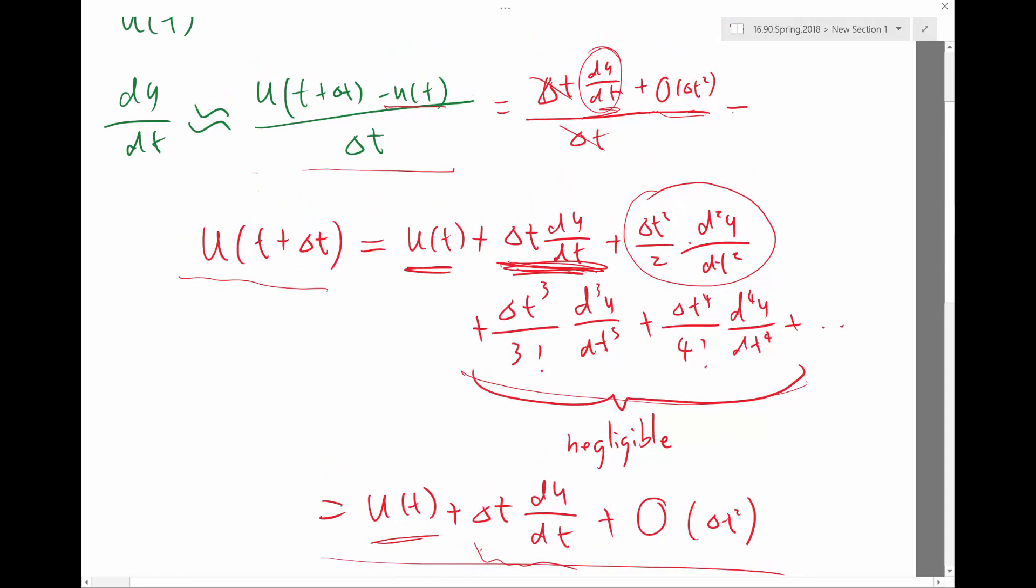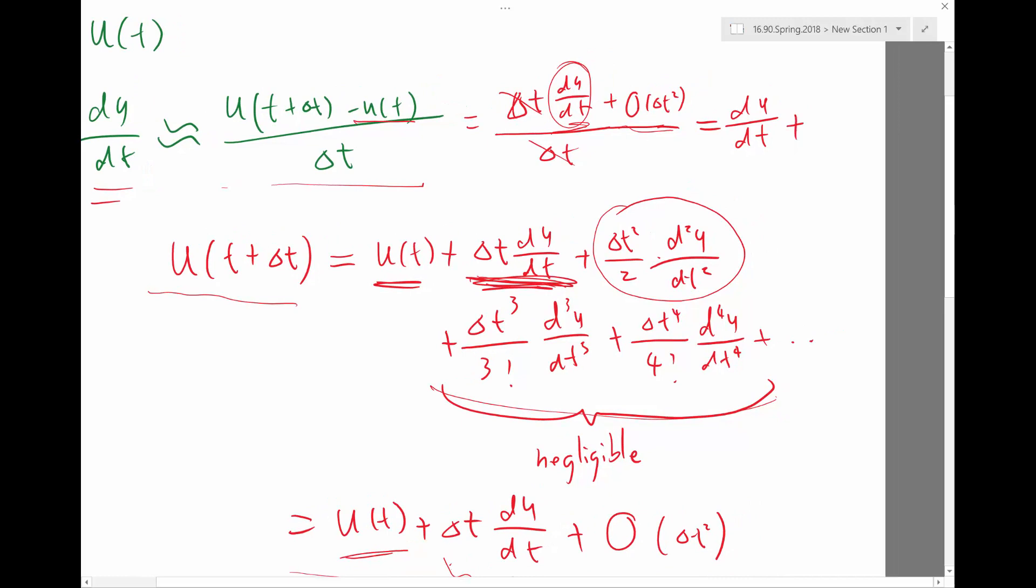So, what you get here is du/dt, which is actually what you wanted to approximate after you plug in the Taylor series plus something that goes to the square of delta t divided by delta t. What is that? If I have a term like that divided by delta t, what do I get? Yeah, I get something proportional to delta t. So, what I see is that my du/dt actually gets approximated by something that has an error proportional to delta t.